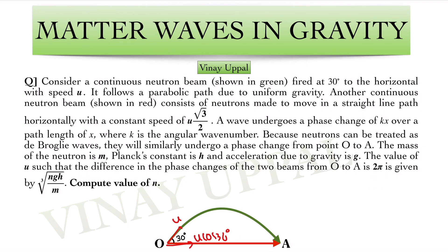Like I said, both these beams are undergoing phase changes but they are going to have different phase changes and the difference between them is 2π. In order for that to happen, the speed u is given by this quantity cube root of ngh/m where n is some number whose value we want to compute. This is the question. Let us have a look at the solution.